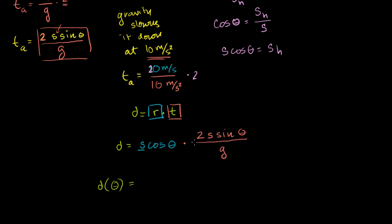The distance traveled as a function of theta is equal to 2 times s squared over g times cosine of theta times sine of theta.